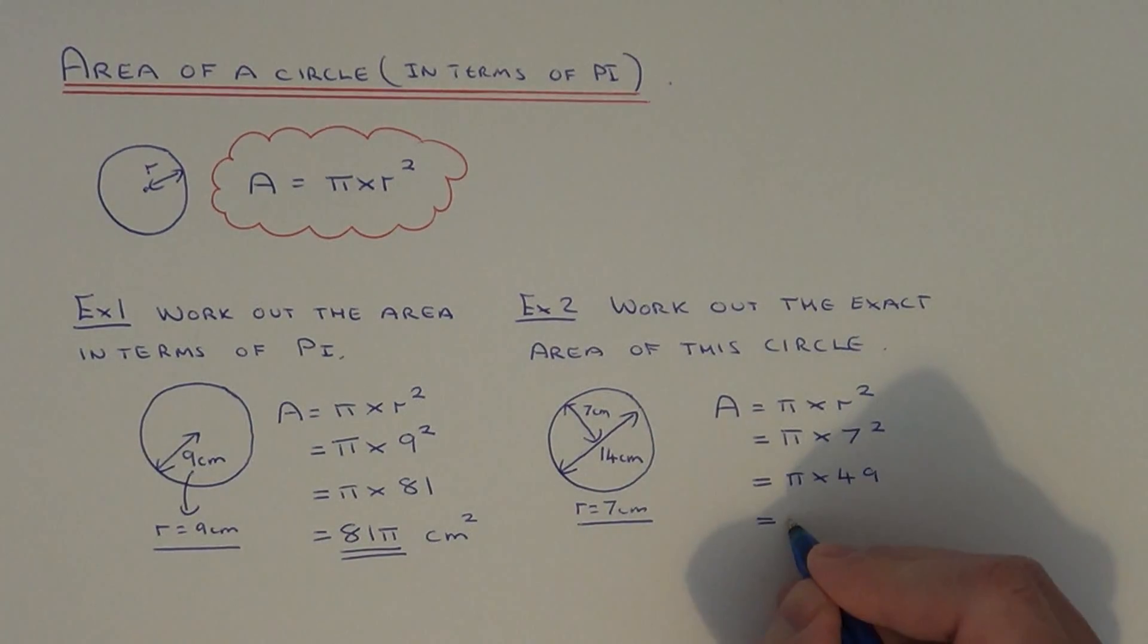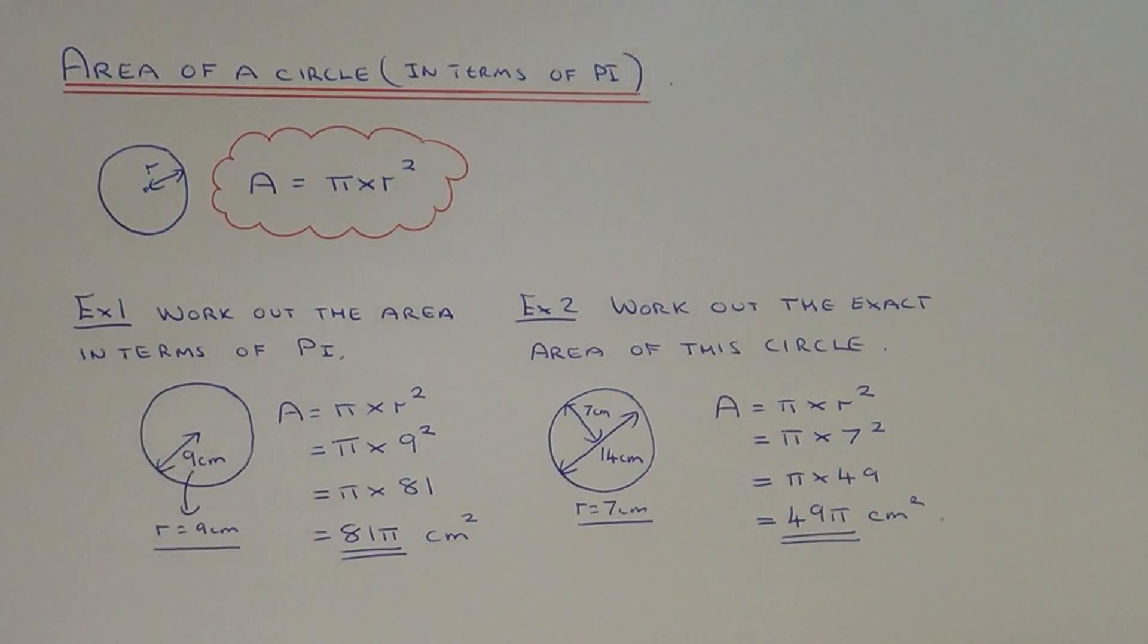Write it down now. It will be 49 followed by pi. Put your number first, followed by pi. So it's 49 pi centimeters squared.